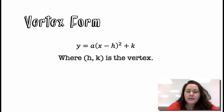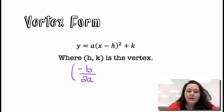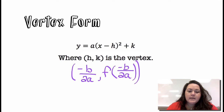It still has that squared piece which makes it fall into the quadratics. So it's vertex form, and we had standard form before. Remember to find H and K, our vertex, it was negative B over 2A, and then F of negative B over 2A — you plug it back in.